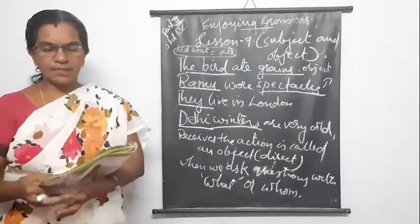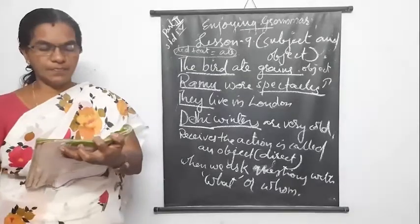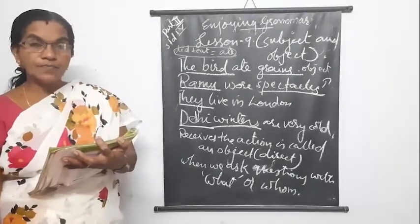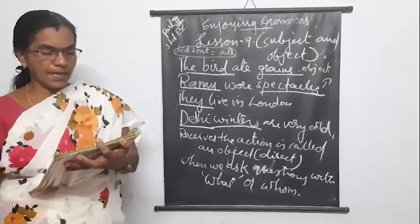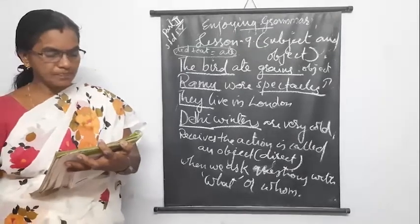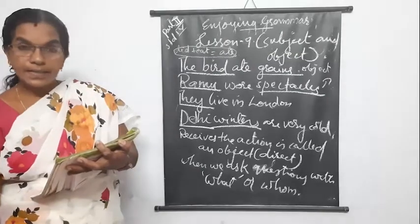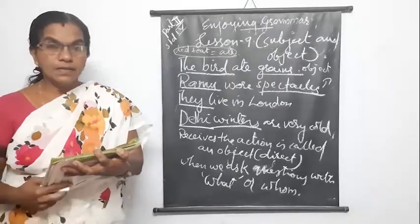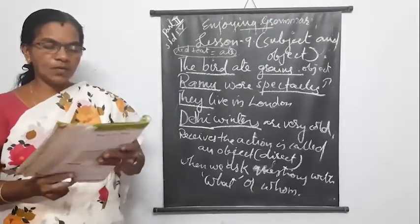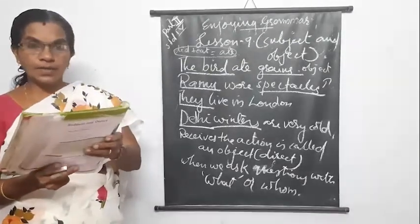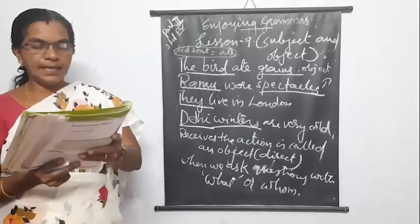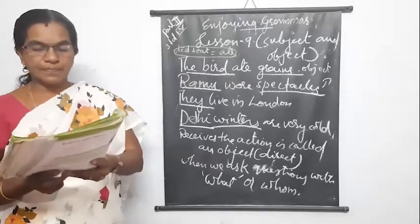Next exercise: write whether the words in color are subject or object. Rityu bought some vegetables — vegetables is the object. Harsha loves sweets — what does Harsha love? Sweets is the object. I ate the chocolate — I is the subject. Rajesh built this house — Rajesh is the subject. I wrote him a letter — letter is the object. The dog chased the postman — the dog is the subject and postman is the object. Take the correct object to complete the sentence: I saw Rajesh in school. I saw her in school. Give it to them. Maya took it. He gave me a card. I called him. She bought it.